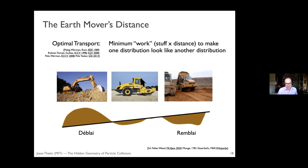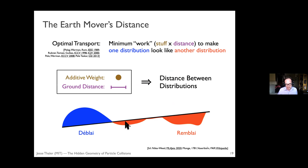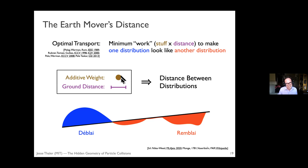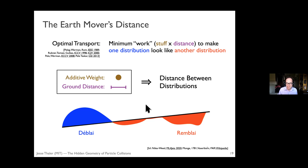The Earth Mover's Distance finds the minimum amount of work — some amount of stuff times the distance to move it — to make one distribution look like another. You have one distribution in blue (the déblai) and you want to move it to another distribution in red. Anytime you have a data set with an additive weight — dirt in Monge's example, energy in particle physics, or dark matter densities in dark matter halos — and a notion of ground distance (literally distance on the ground for dirt, or rapidity-azimuth distance in particle physics), that gives rise to a distance between distributions. Because energy flows can be thought of as energy densities and hence distributions, we import this concept as the Energy Mover's Distance.